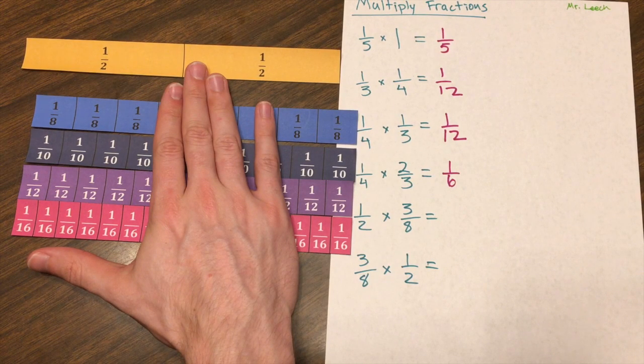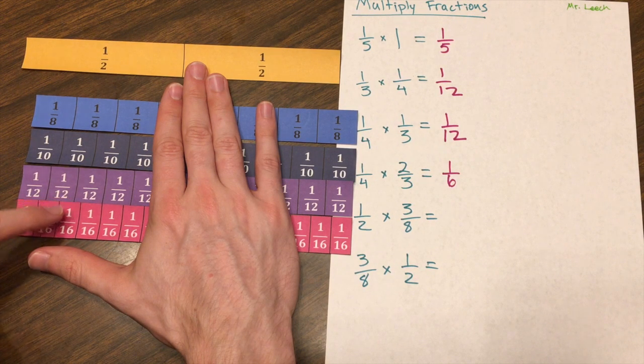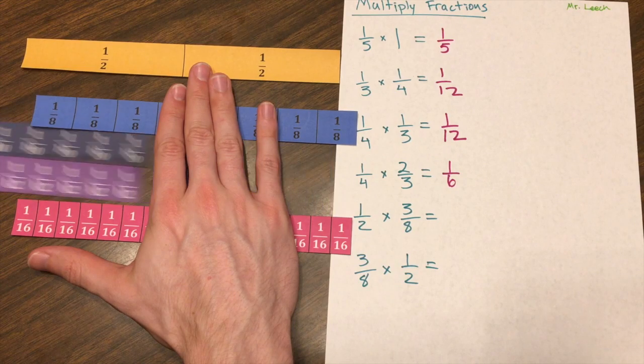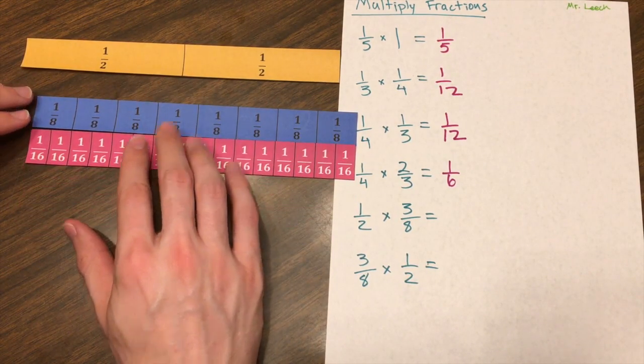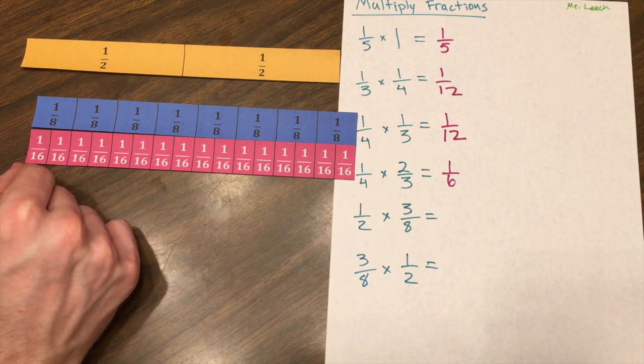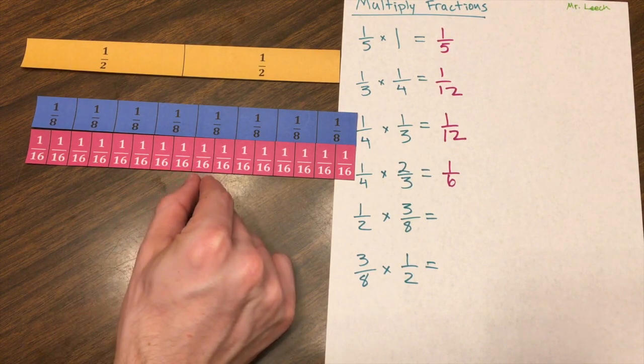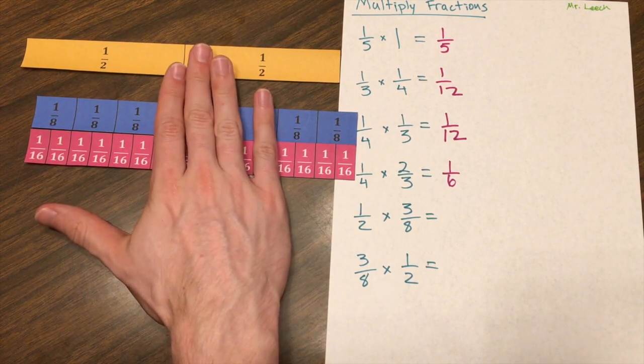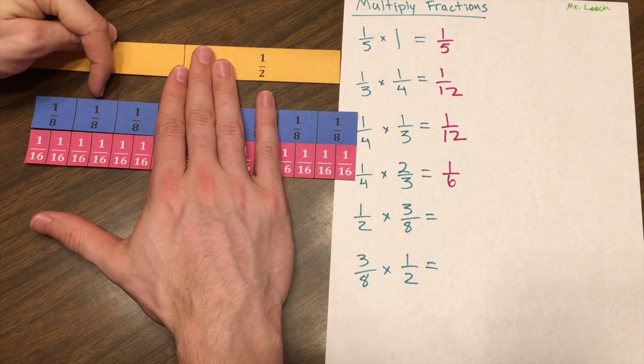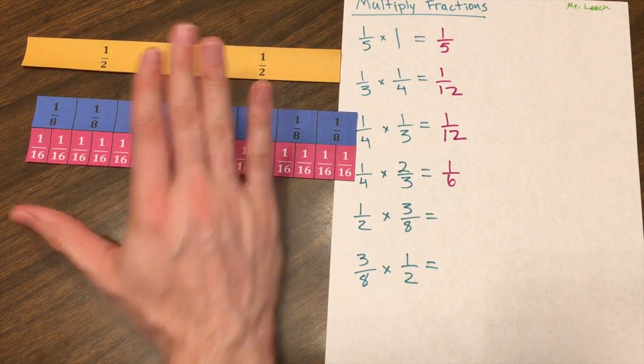Looking at the fractions that are smaller than one-eighth, one-tenth is a little bit too big, one-twelfth is a little bit too small, but one-sixteenth looks to be right on the money. Let's take a closer look. And indeed it is. You can see how every two-sixteenths is an eighth. That's because two-sixteenths reduces to one-eighth. And so if I have three of these sixteenths, that is exactly at half of the three-eighths. So my solution is three-sixteenths.